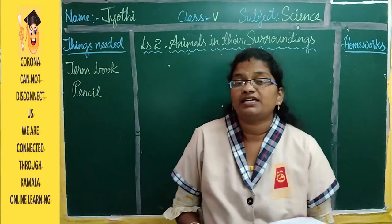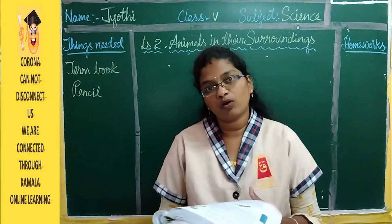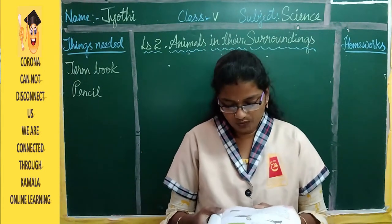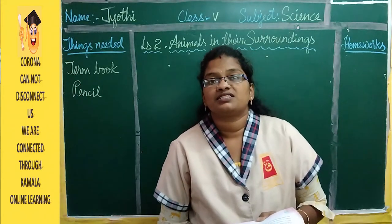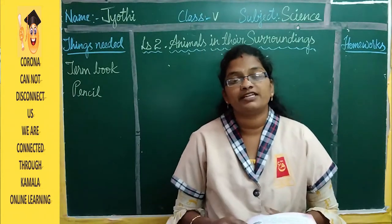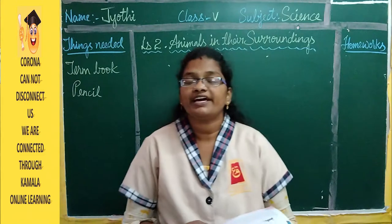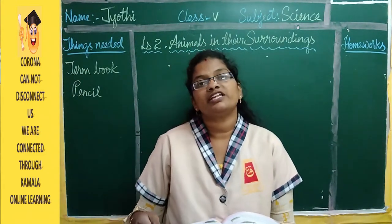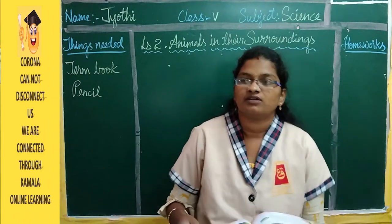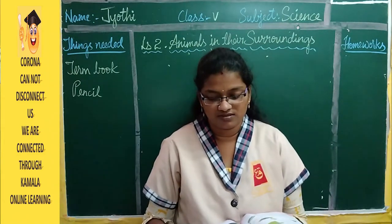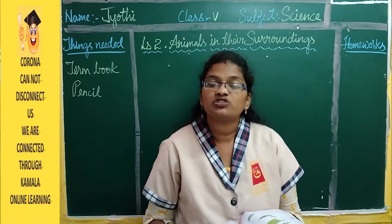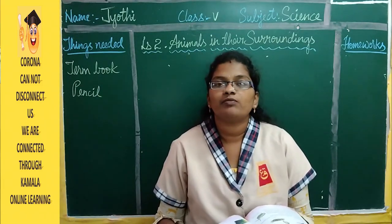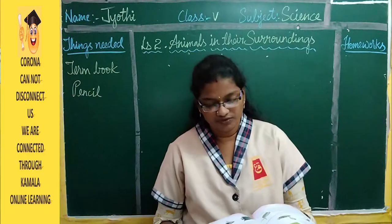Snakes have scales under their body and move with the help of those scales. Ants, termites, and houseflies have wings and six legs to move. Butterflies have a very soft body with no strong muscles or bones, and they fly with the help of their fins — wings.